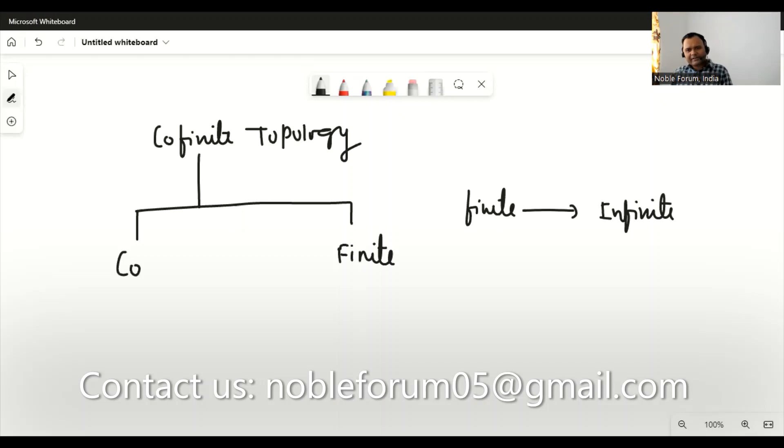So co-finiteness - here is the definition of co-finite topology. What has been given in the definition? If there is a set, then I'm saying open, or of course if there is empty set or whole set then it's okay.